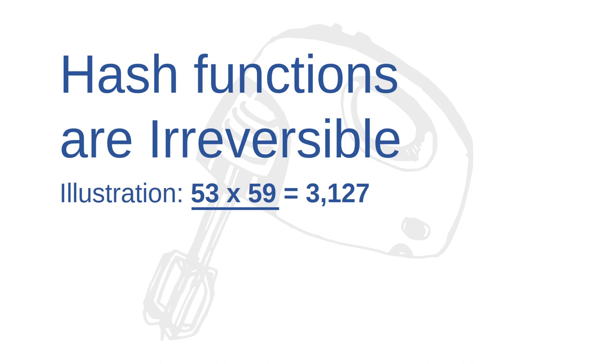What this illustration shows is that some mathematical functions are much easier to figure out forwards than they are backwards. It's much easier to multiply two prime numbers together than to find the prime factors of a large number. Even computers struggle to find prime factors when the numbers involved are big enough. Hash functions are the same way. It's relatively easy to turn a password into a hash, but there's no known way to reverse a hash function.